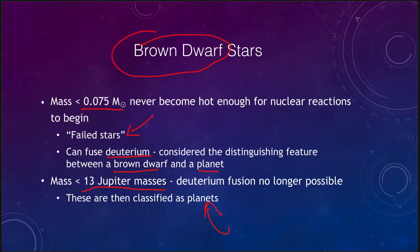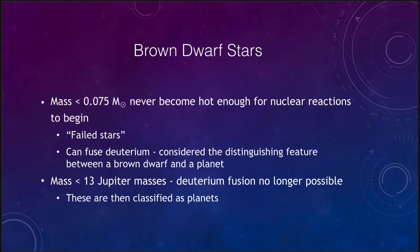If we took all the mass of all the other planets in the solar system and all other objects within our solar system other than the sun, we would not even have one more Jupiter mass. So all of the material left behind is not close to making Jupiter even a brown dwarf, let alone a star.